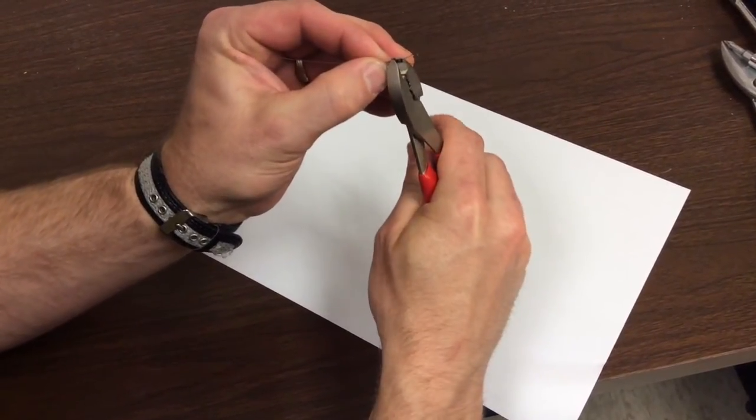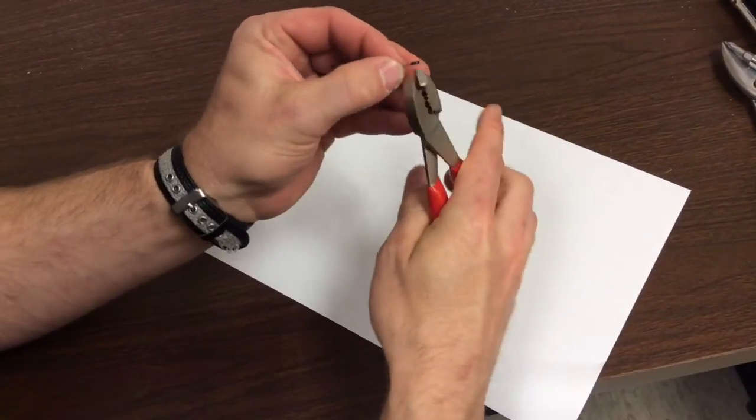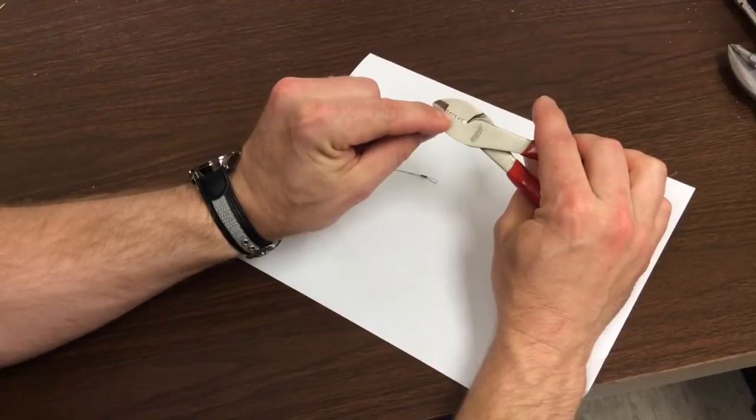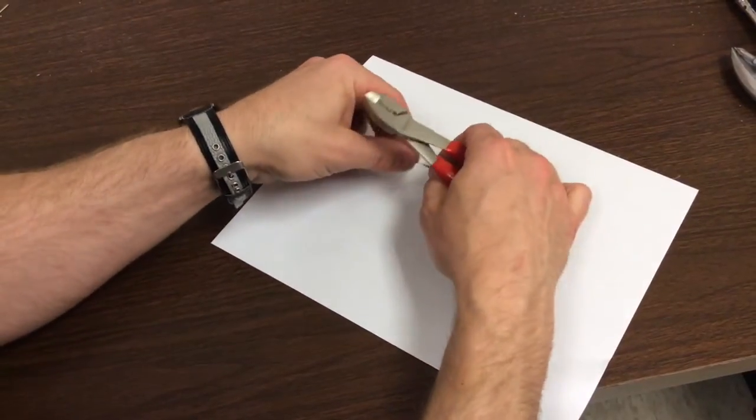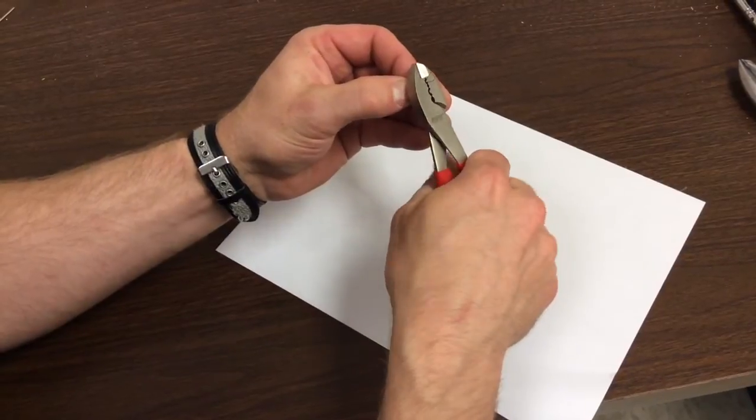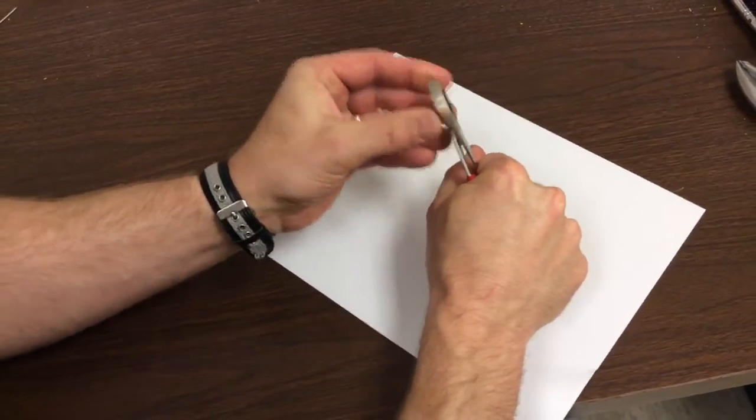What you're going to want to do is give it three crimps, and then you're going to use this first slot here to crimp it the long way. So you place it in that first slot and then crimp it the long way. Give it a good crimp there.